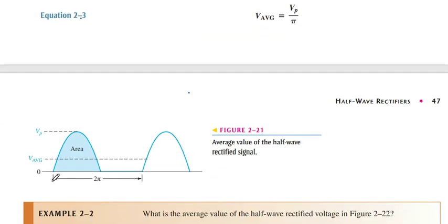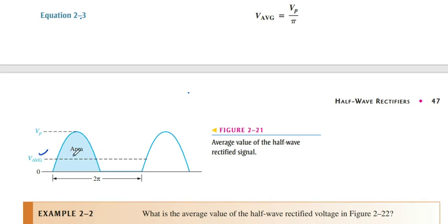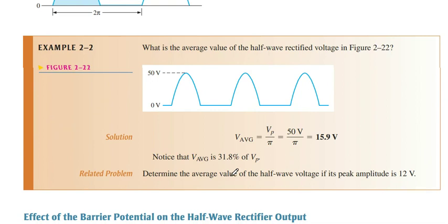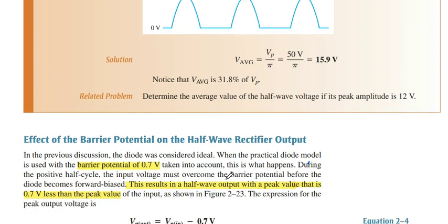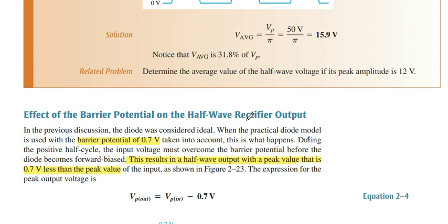The complete cycle is two pi, so half of that — pi — will be dropped, and we get the average. Vp is the peak value of voltage, but if we convert it to pure DC form, we get the average DC value. This is a numerical example — if you have any problem, discuss with me in the comments.